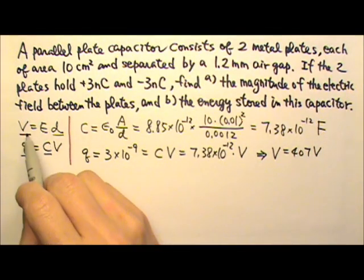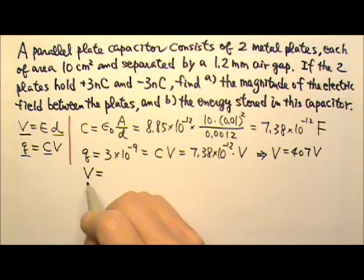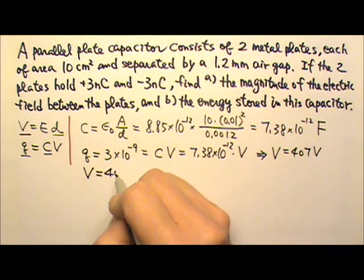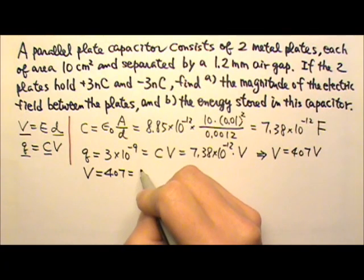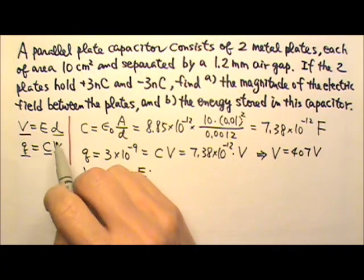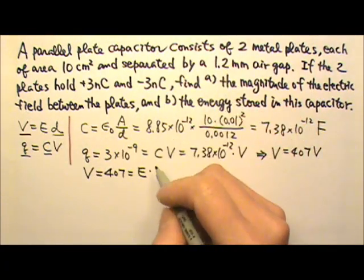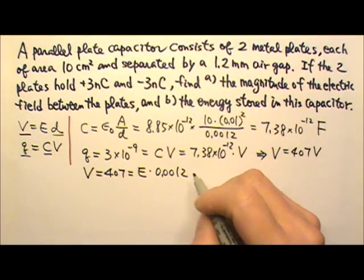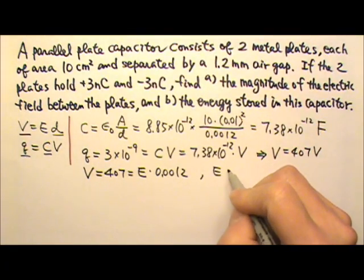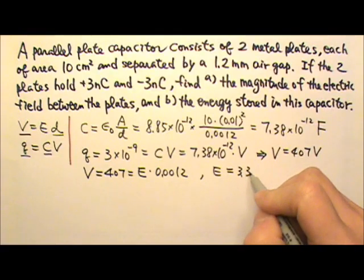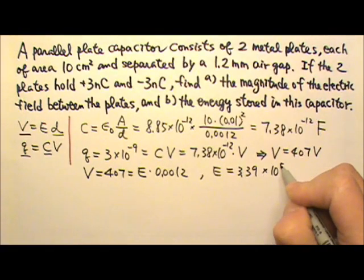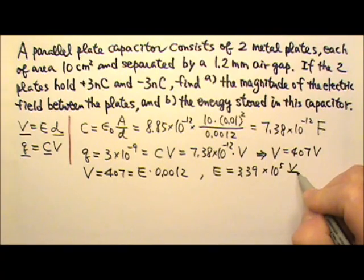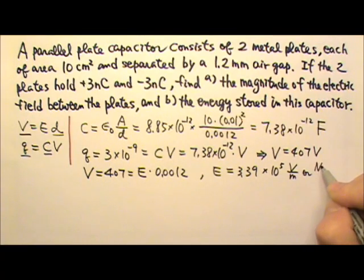Now we can use V equals Ed to find the electric field. The voltage is 407, and we're looking for the electric field, and we already know the plate separation is 1.2 millimeters, 0.0012 meters. So the electric field is 3.39 times 10 to the fifth. And that will be volts per meter or newtons per coulomb.